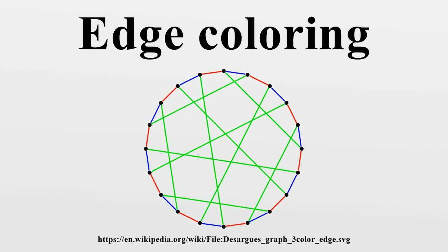For example, the figure to the right shows an edge coloring of a graph by the colors red, blue, and green.